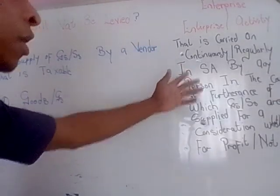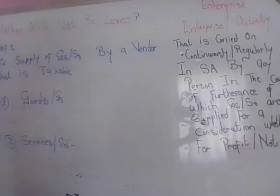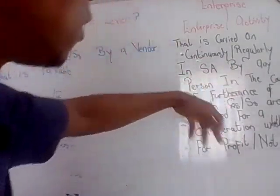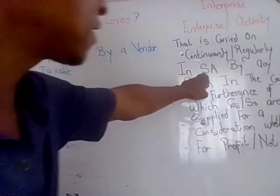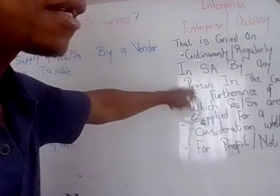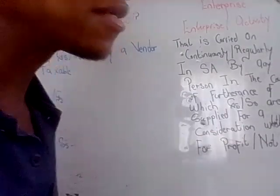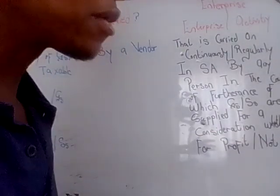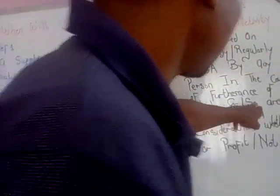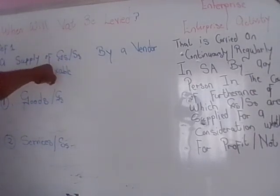If you have a business — which would likely make it an enterprise — and that business is operated continuously, open from Monday to Friday, located within South Africa, by any person whether a company, trust, corporate, or close corporation, as long as it qualifies as a recognized business under the South African Companies Act, and it's in the supply of goods or services — those are the points we touched on in our prior definition.